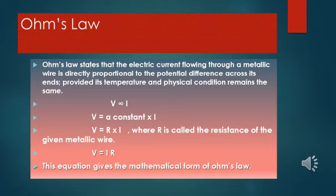This means that the more work done by the battery to move the charges, the more is the flow of charges through the conductor. V proportional to I, or V = constant × I, and V = R × I, where R is called the resistance of the given metallic wire, or V = I × R. This equation gives the mathematical form of Ohm's Law.